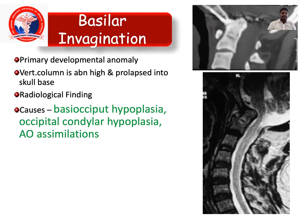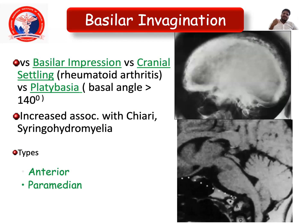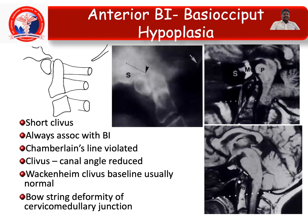Basilar invagination is a primary developmental anomaly where the vertebral column abnormally rises and prolapses into the skull base. Radiological findings include basi-occipital hypoplasia, occipital condylar hypoplasia, and atlanto-occipital assimilation. In the anterior type, there is a short clivus associated with basilar invagination: the Chamberlain line is violated, the clivus-canal angle is reduced, and the Wackenheim-Clivus baseline is usually normal.